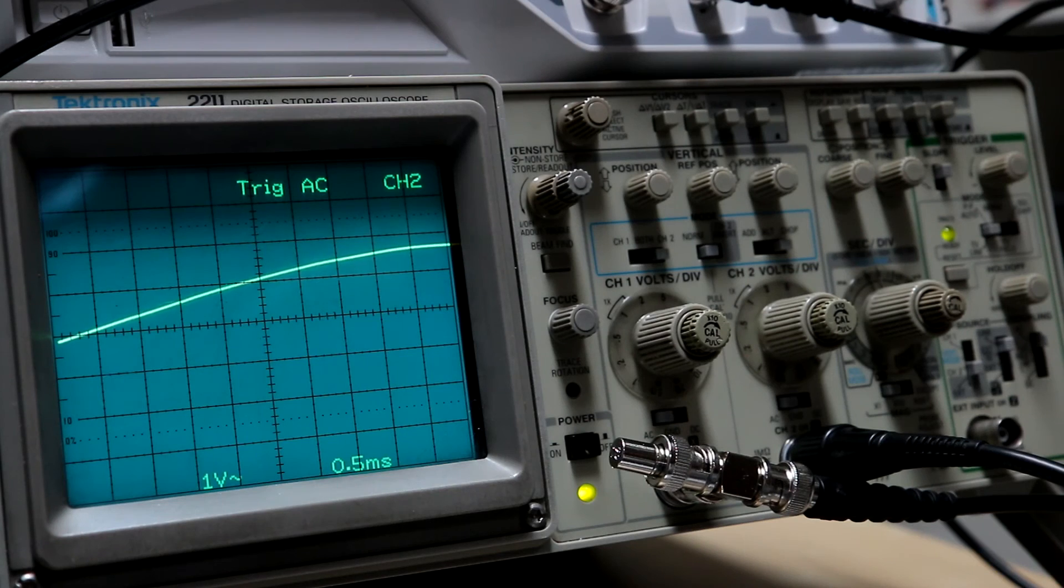Now we're just going to have a quick look at the storage function. It's quite poor compared with modern scopes. It's got 4k points of memory and the sample rate is 20 mega samples per second, which when you compare it with the Rigol up there which has got 24 mega points of memory and a sample rate of 1 giga samples per second.